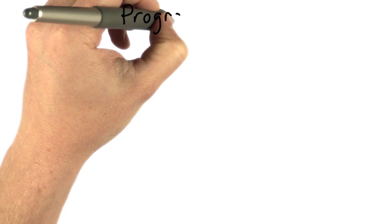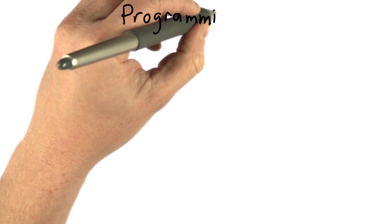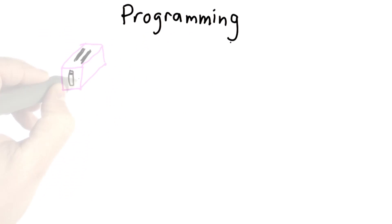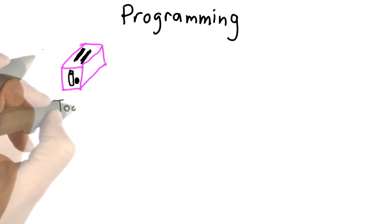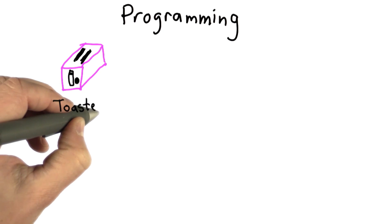So let's get started with programming. Programming is really the core of computer science. Most machines are designed to do just one thing. This is supposed to be a toaster. It's more of a representational drawing than an accurate one.